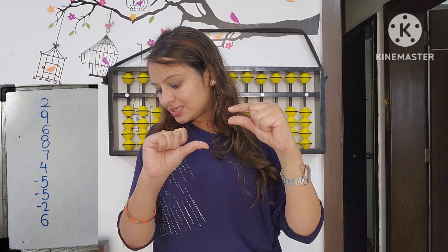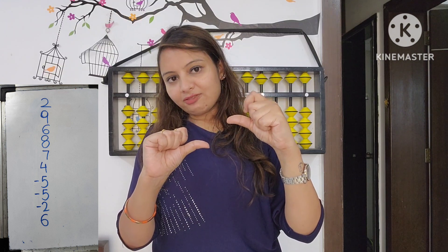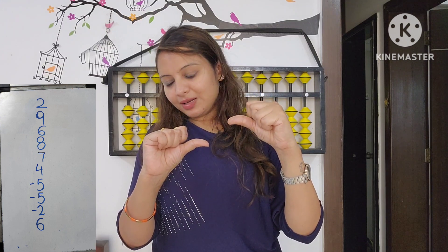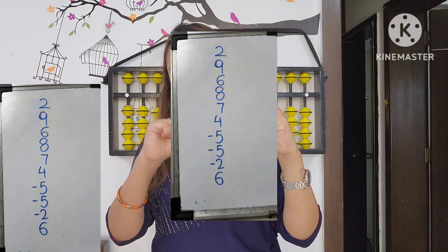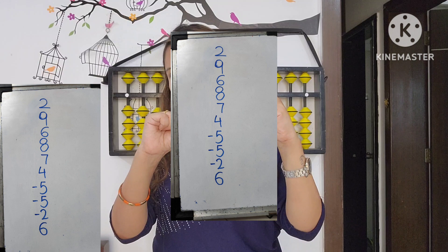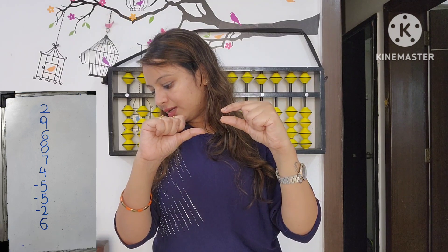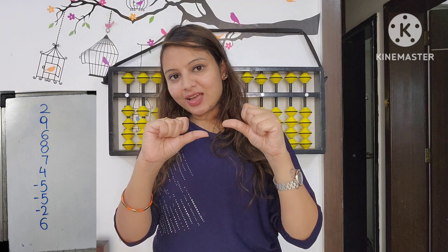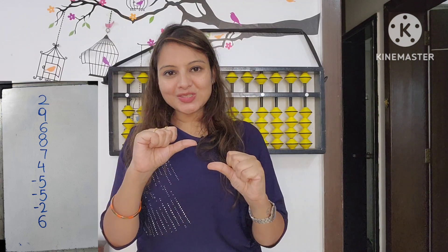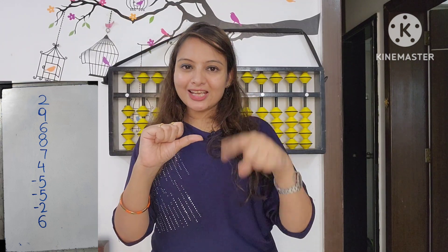Now 4: add 5, less 1 — answer is 36. Now less 5: happening simple — answer is 31. Now less 5 again: not happening simple, so less 10, add 5 — answer is 26. Then less 3: add 2, less 5 — answer is 24. Now 6: less 4, add 10 — answer is 30.